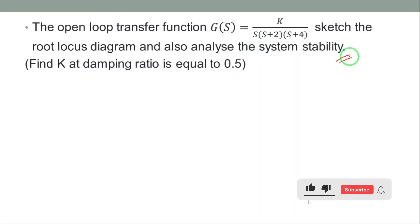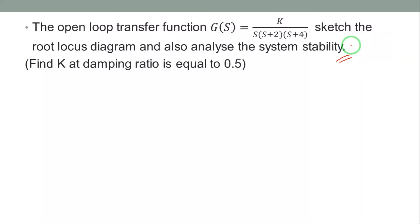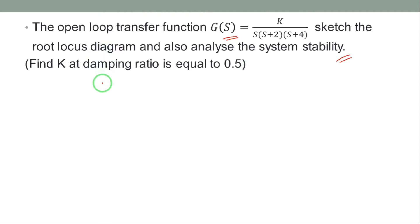In this class we will discuss the construction of root locus. The given open loop transfer function G(s) is provided in the question. We need to sketch the root locus diagram, analyze the system stability, and also find K at damping ratio zeta equal to 0.5.